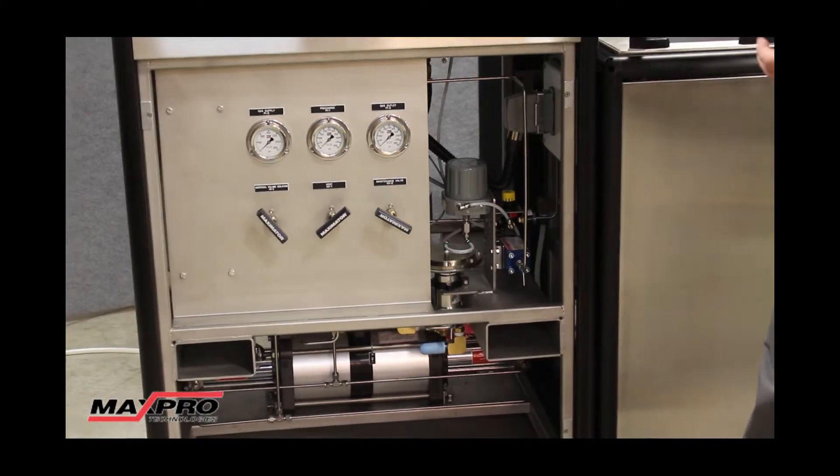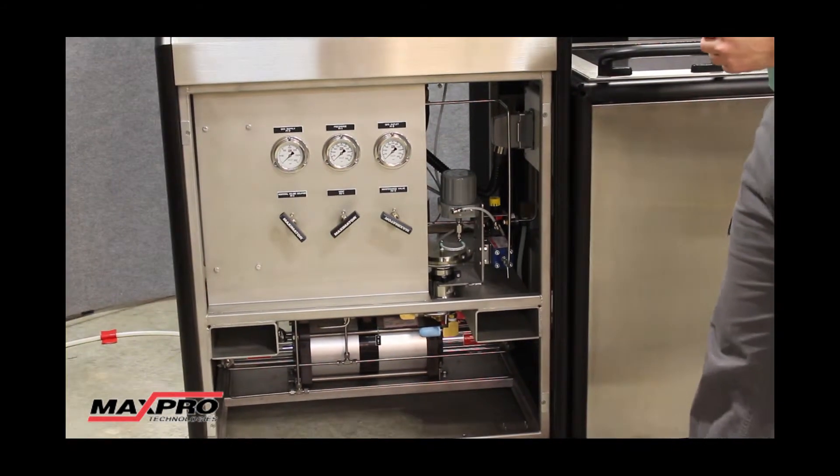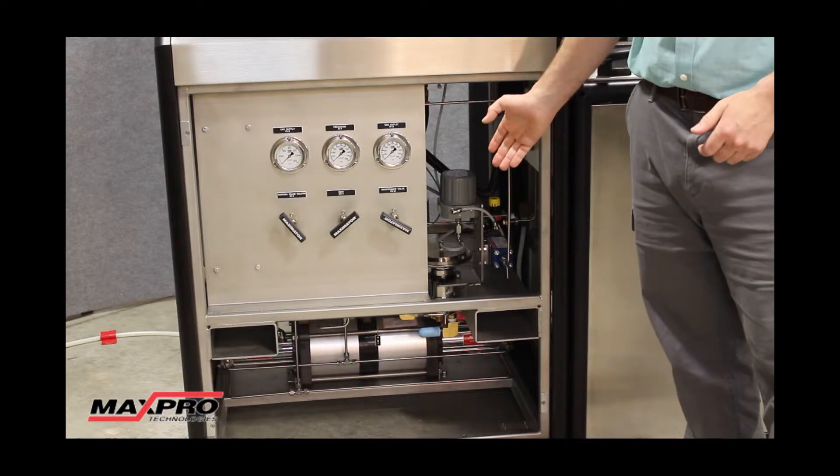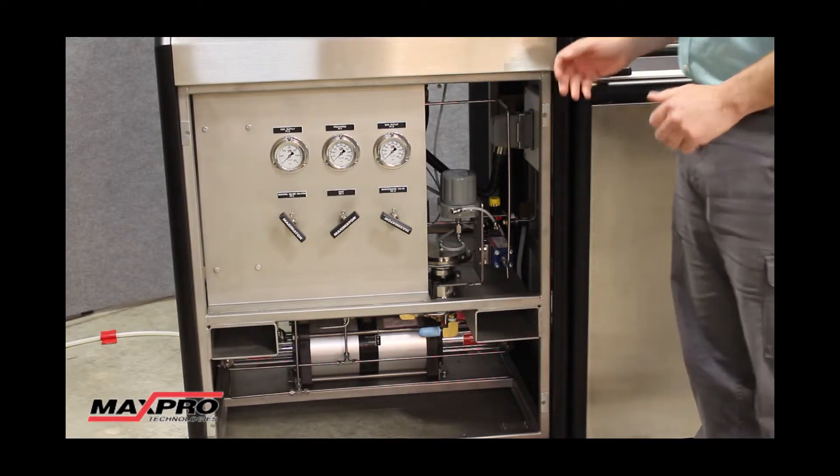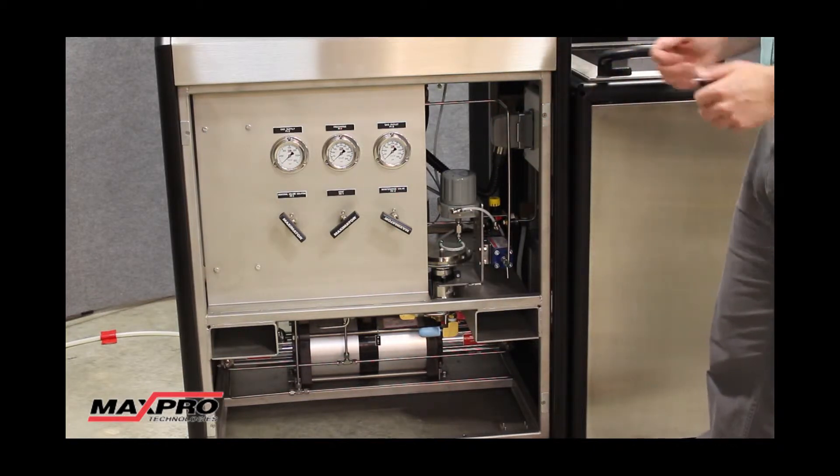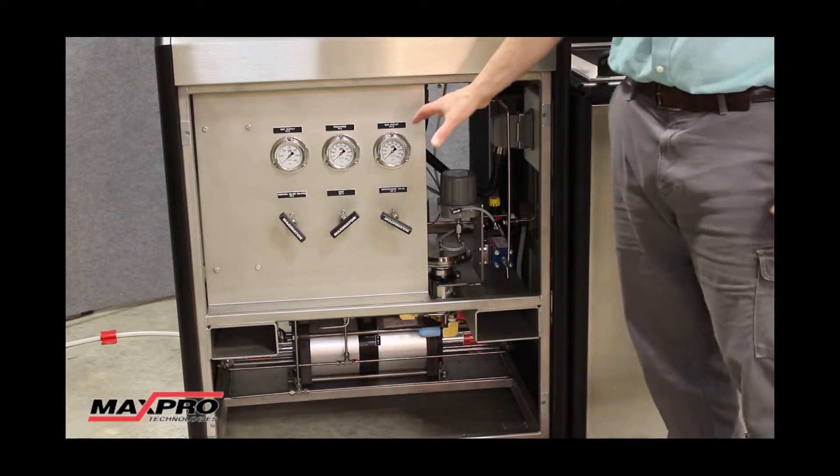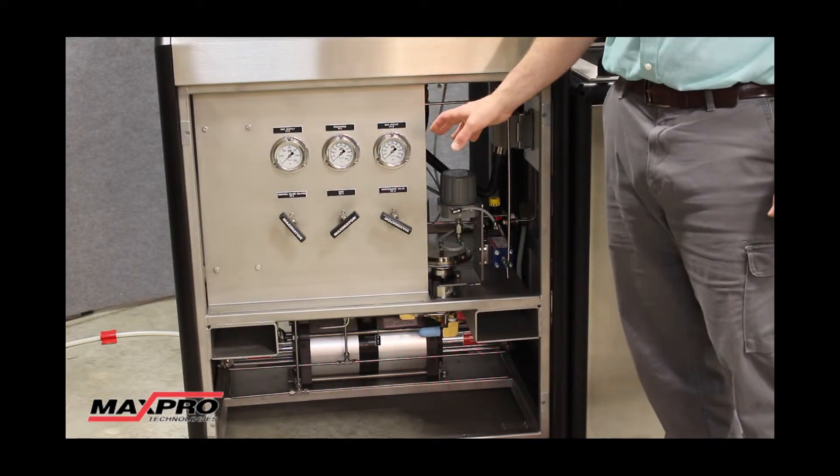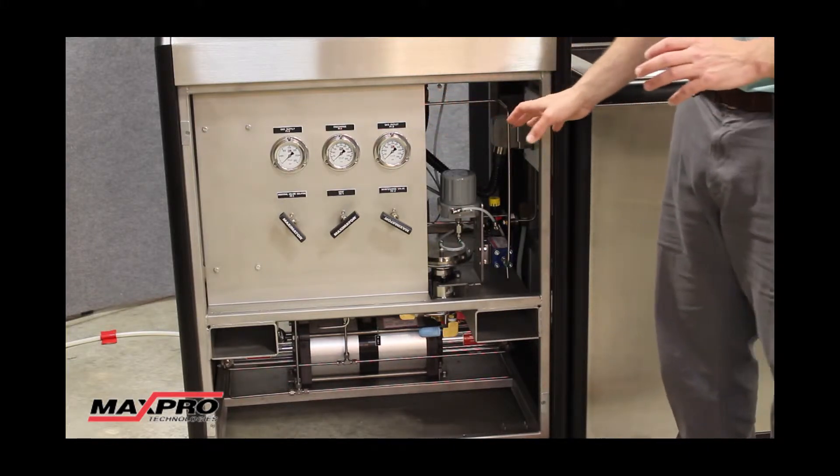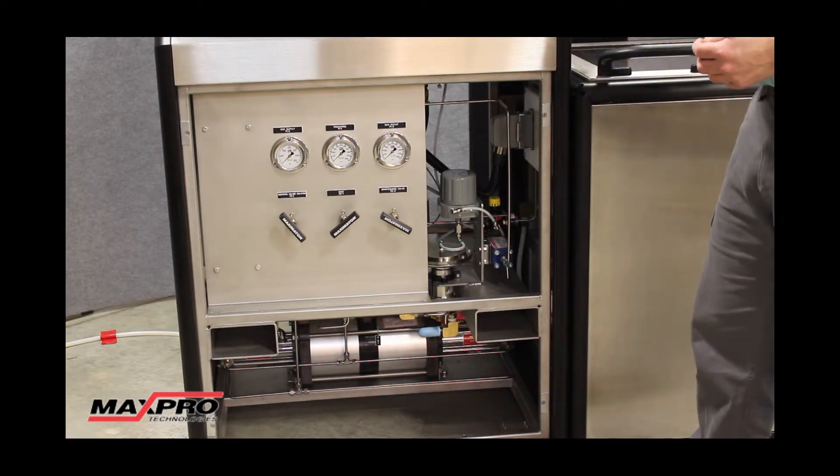The control cabinet is built around a Maximator DLE 30-2 gas booster with entirely automated controls. Everything you see under the panel is simply for maintenance purposes. The operator shouldn't have to touch any of these dials or gauges on a regular basis.